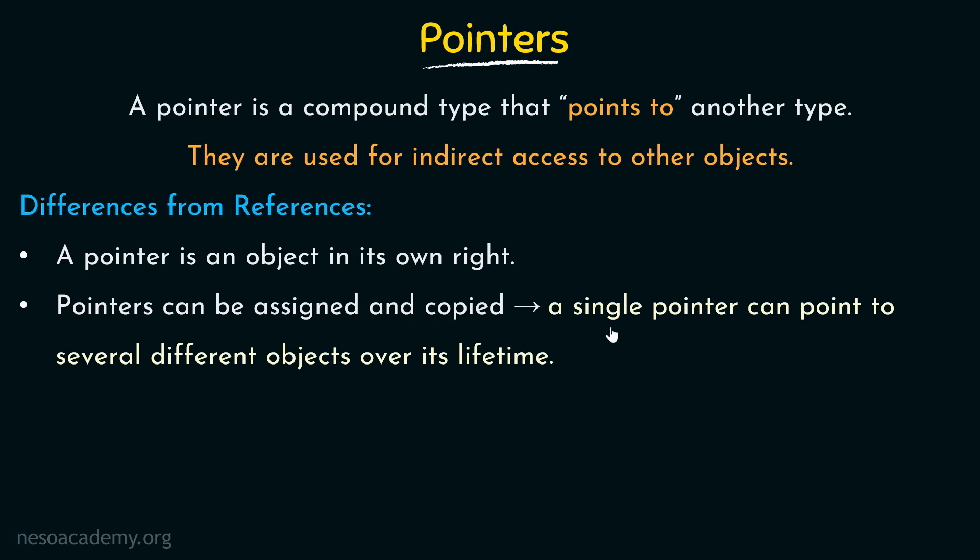Pointers can be assigned and copied. A single pointer can point to several different objects over its lifetime. In case of references, once a reference is declared and initialized, it is always bound to that object and we can never rebind it to another type during its lifetime. But pointers are different — a single pointer can point to several different objects. We may declare a pointer, make it point to a certain object, and later make that same pointer point to a different object.